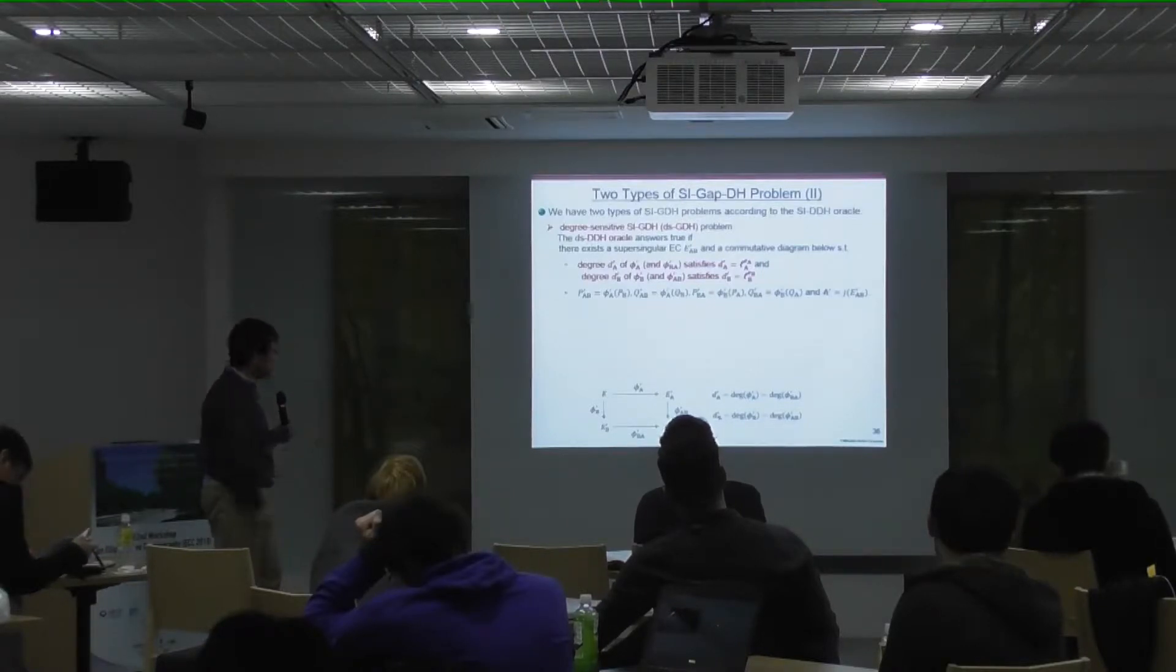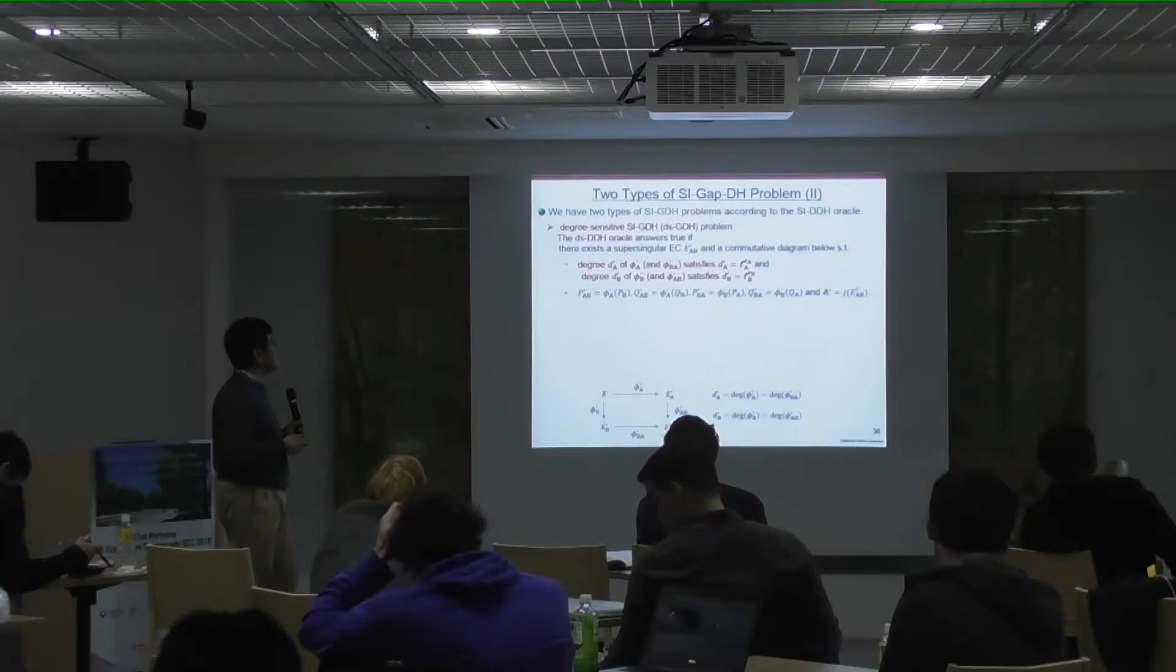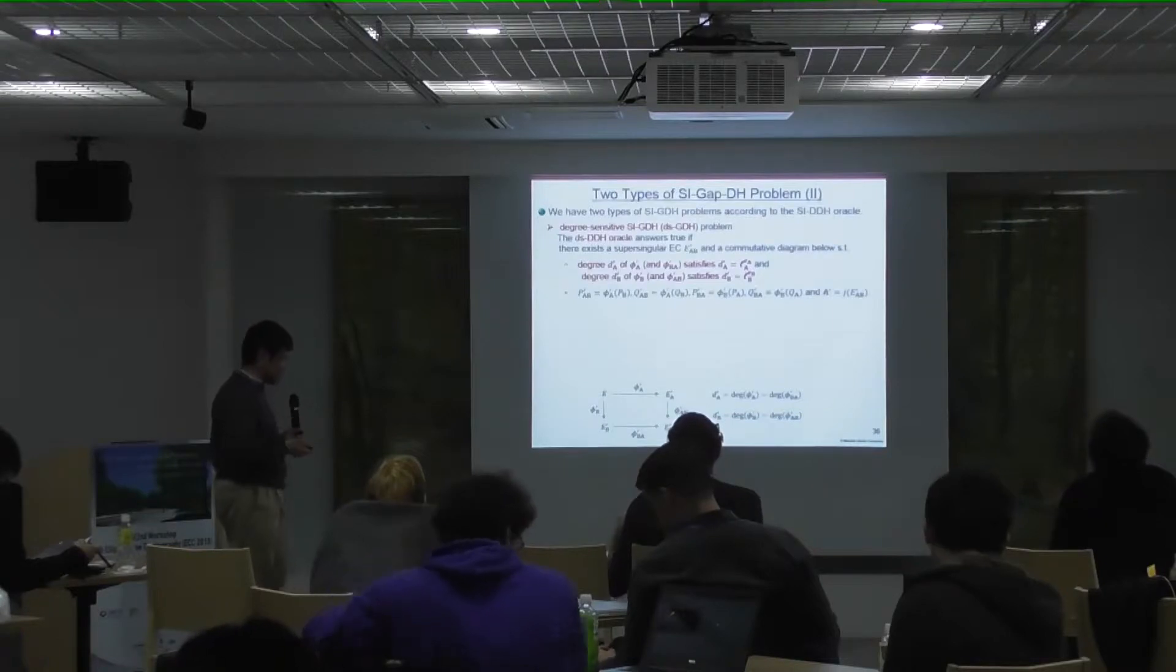The degree of isogenies phiA and phiB is restricted as indicated by the public parameter. That is, phiA is LA to EA, and phiB is LB to EB. Such a restriction leads to Galbraith's partial key attack.